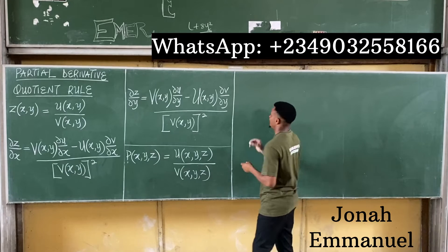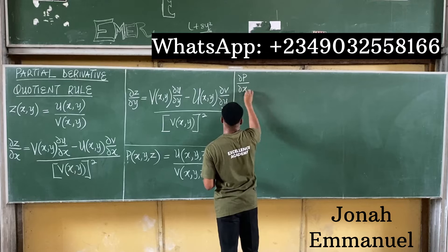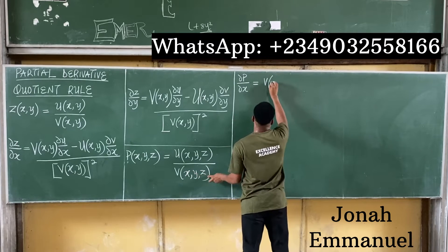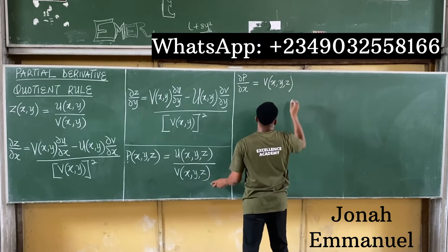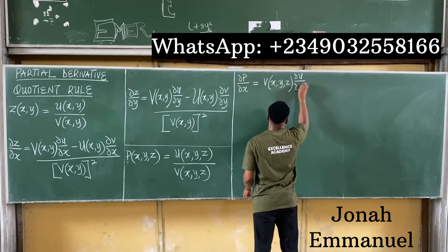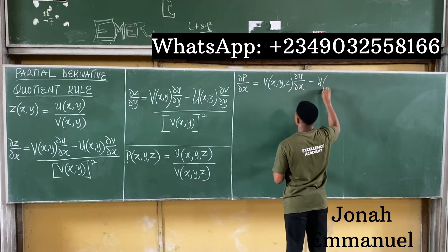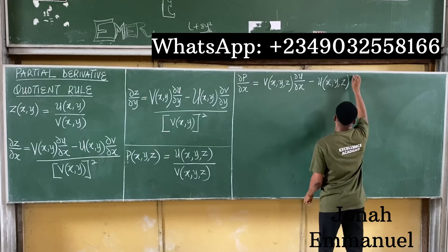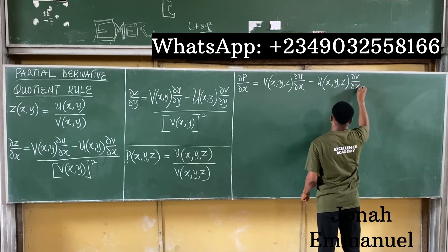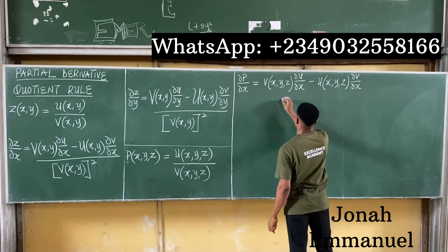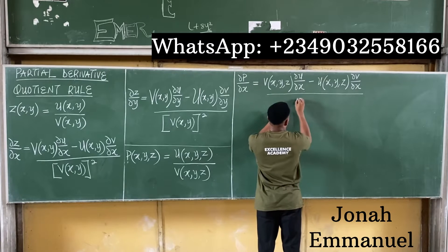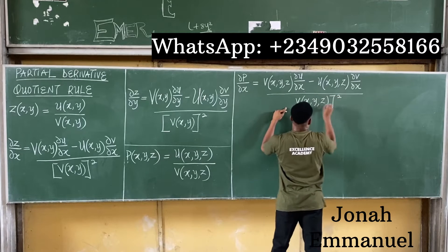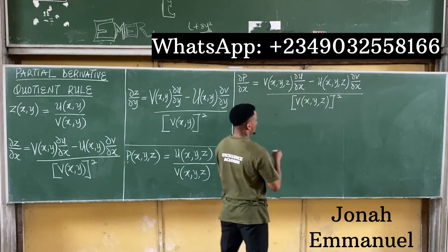For the three-variable case, ∂p/∂x is equal to v(x,y,z) times ∂u/∂x minus u(x,y,z) times ∂v/∂x, all over v(x,y,z) squared. We are differentiating with respect to x throughout.